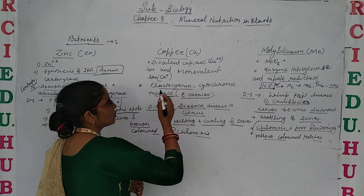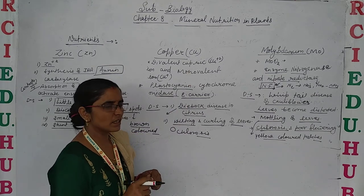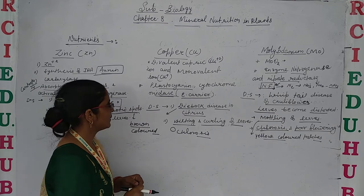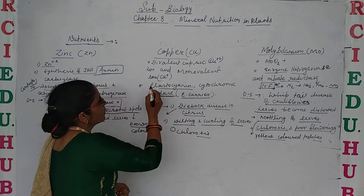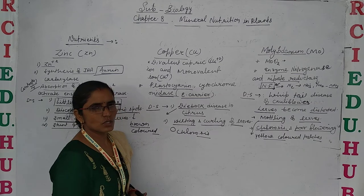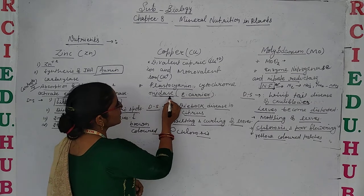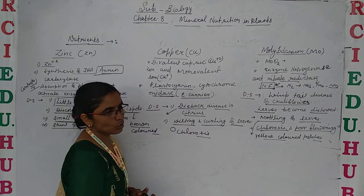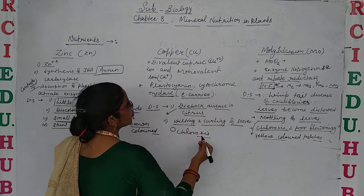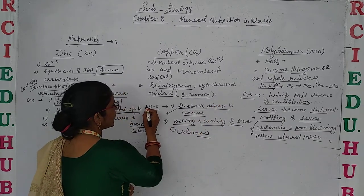Now let's discuss about copper. Copper is absorbed by the plants in the form of divalent and monovalent ions. Copper is the main component of plastocyanin and cytochrome oxidase, which are the electron carriers in cyclic and non-cyclic photophosphorylation.